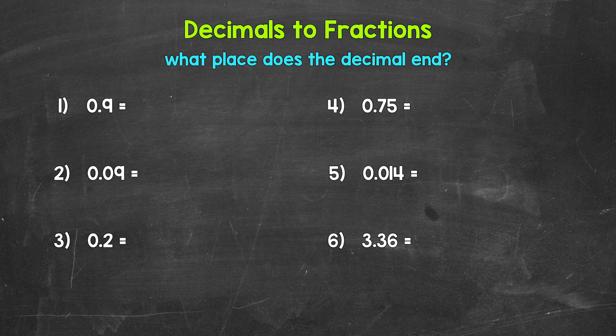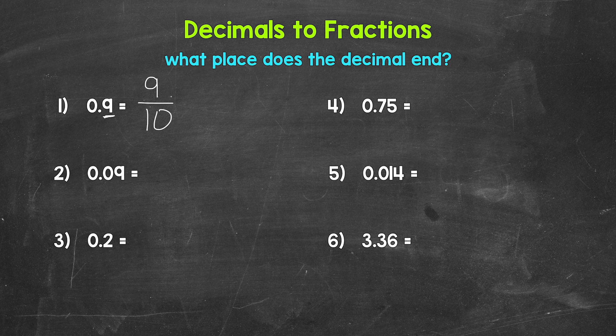For example, number one: we have 0.9. We have a nine, which is going to be our numerator. That decimal ends in the tenths place, so our denominator is going to be 10. So nine over 10, nine-tenths. Now once we have the fraction, we can look to simplify if possible. Nine-tenths is in simplest form — the only common factor between nine and 10 is one. We can read the decimal as nine-tenths and the fraction as nine-tenths; these are equal, one is just a decimal, the other a fraction.